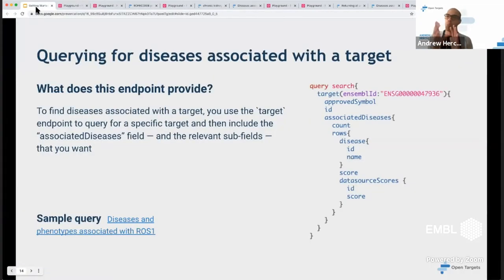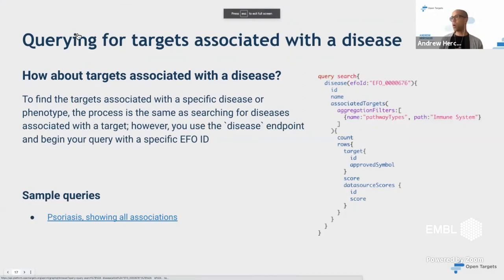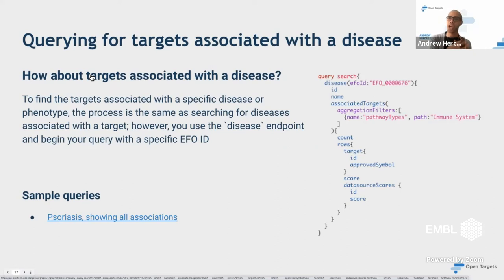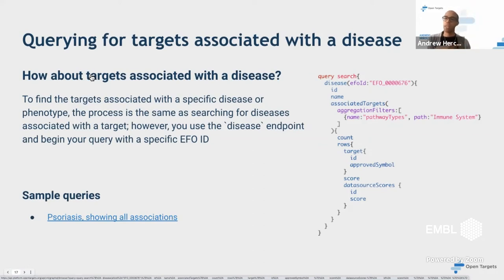Now flipping the question: I'd like to get targets associated with a disease. We do the same thing — construct a query string — but because we're asking for associated targets, we start with the disease endpoint. I have the EFO ID for psoriasis and want all associated targets. The query name becomes 'targets associated with a disease', starting with the disease endpoint and passing in the EFO ID.